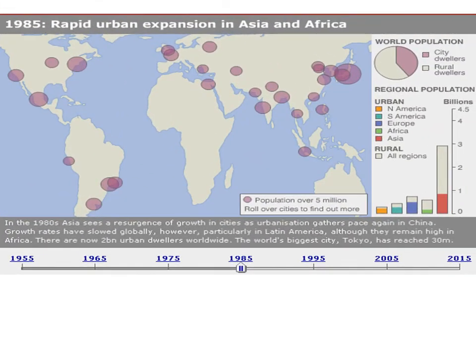Then in 1985, so about 35 years ago, the distribution of very large cities had already become more global, because many cities of this type now existed in Asia and in Latin America. This did not mean that Asia was already an urban continent — it simply shows that this is where you could find the largest number of very big cities. And do not forget that Asia is far more populated than any other area in the world.